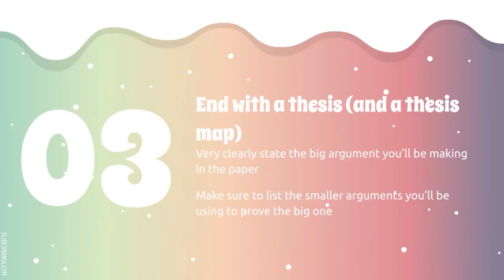Then you want to end with a thesis and a thesis map. A thesis tells your reader: this is the argument I'll be proving in this paper — without referencing yourself or the paper, because that's considered weak writing. Make sure to list the smaller arguments as well; that's what the thesis map is.